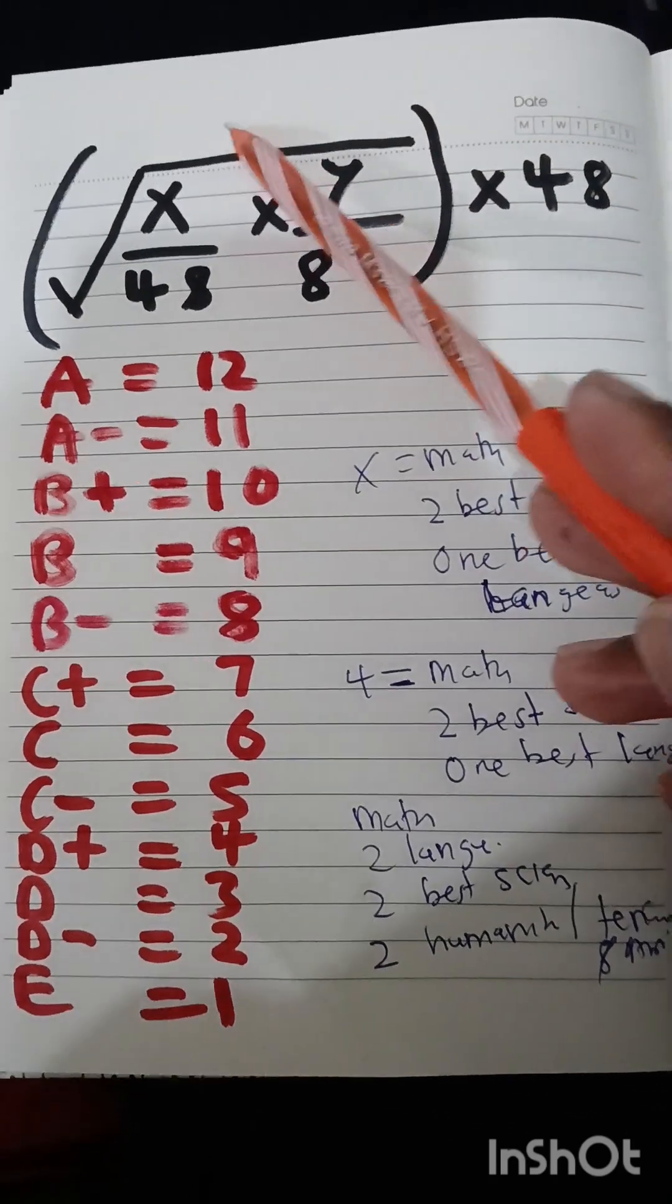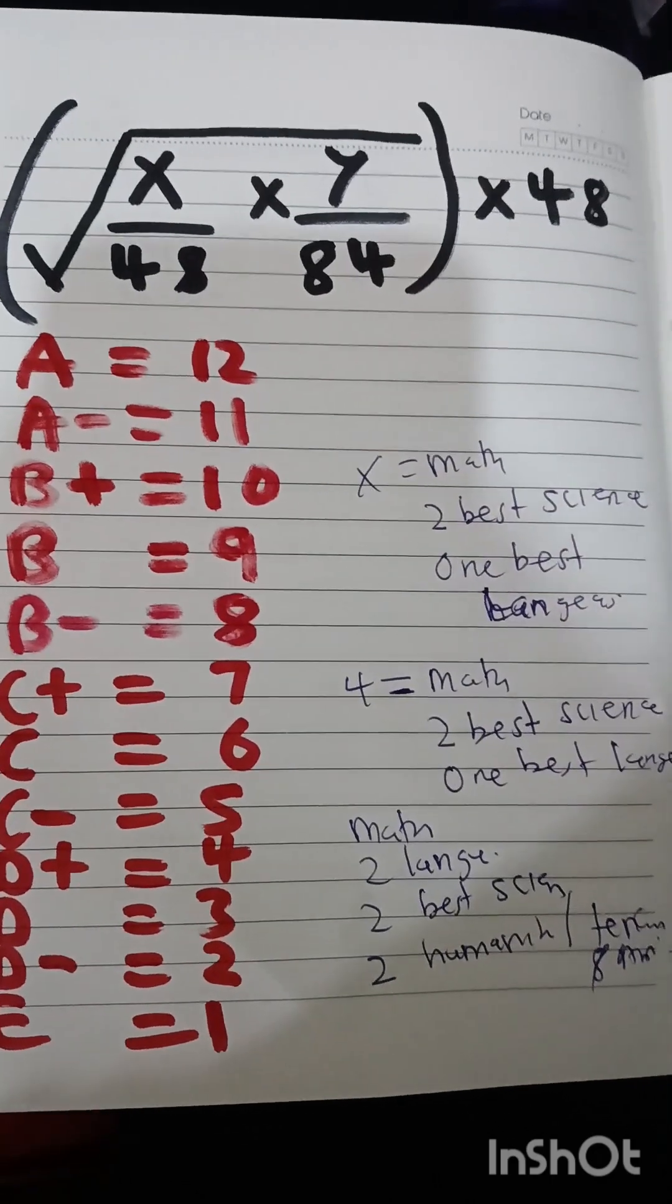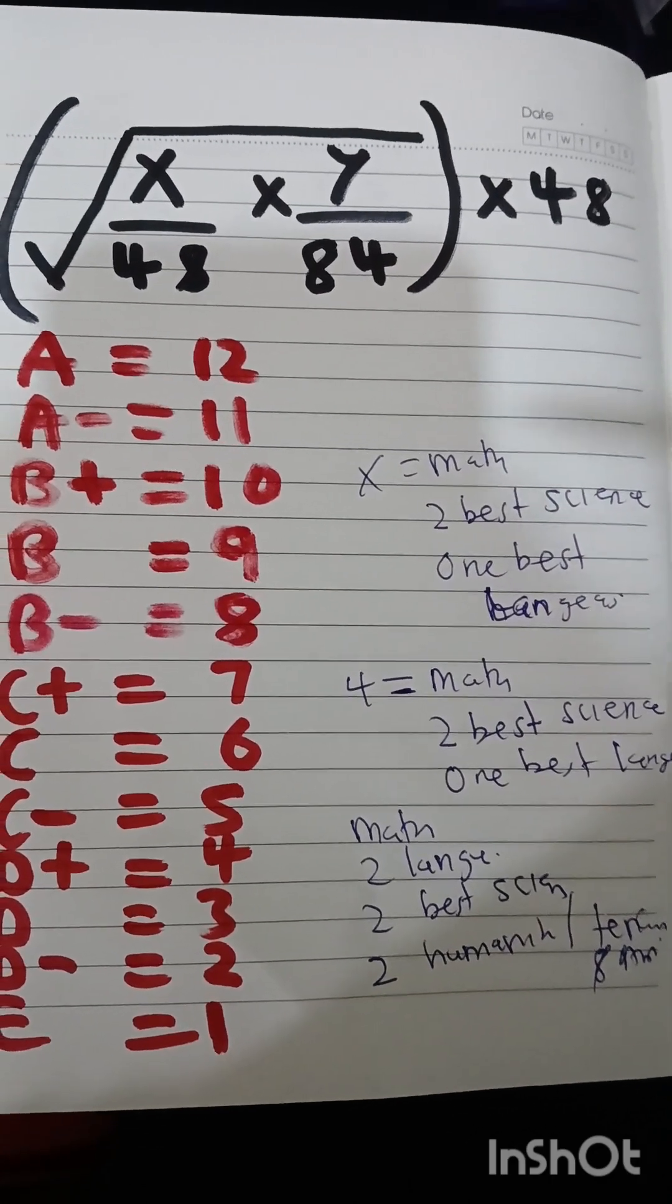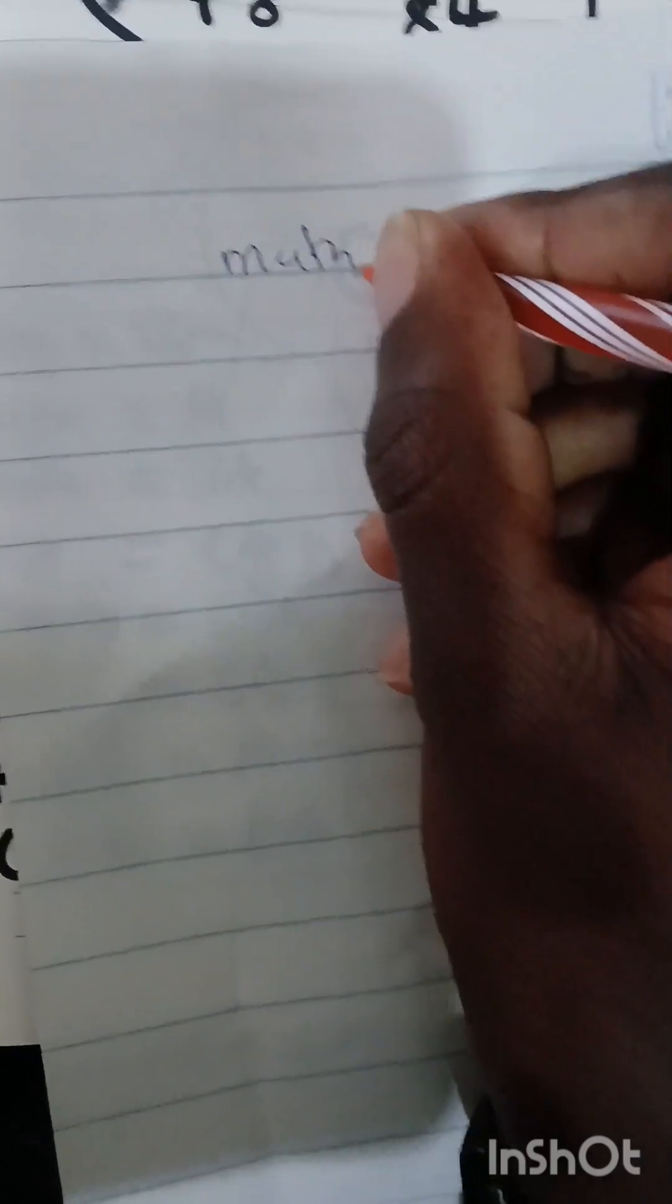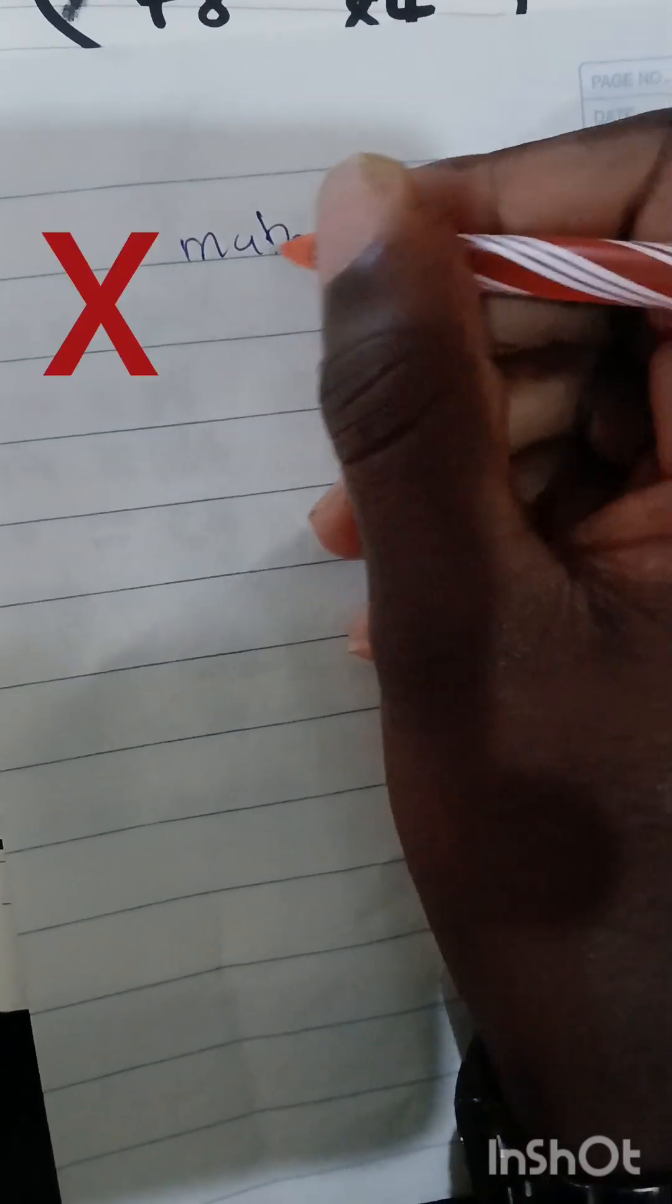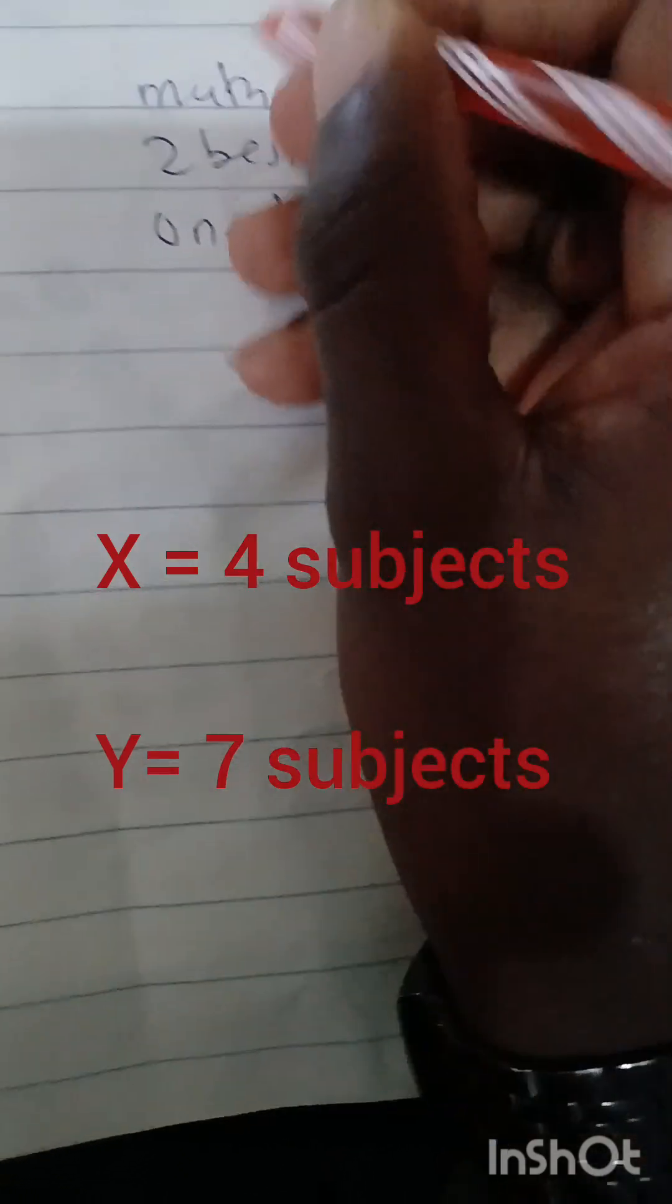So you find the answer of this section first, then you multiply it by 48. Let's understand first the elements of this formula. x represents mathematics because in each cluster mathematics is considered, then two best sciences, then one best language. That is for y.